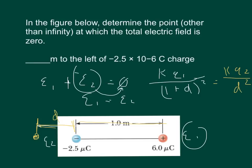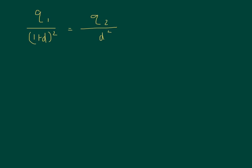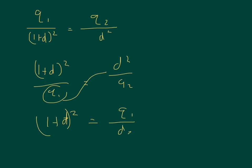If we divide both sides by K, K cancels out and we're left with Q1 over 1 plus D squared equals Q2 over D squared. Now I'm going to take the inverse of both sides. So I'll get 1 plus D squared over Q1 equals D squared over Q2. Now I'm going to multiply Q1 over and I'll get 1 plus D squared equals Q1 over Q2 times D squared.